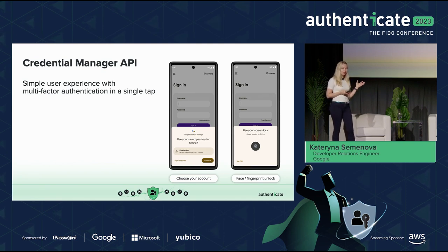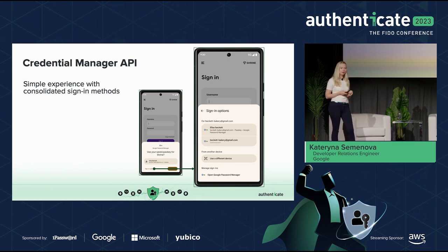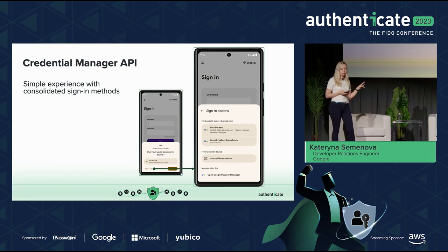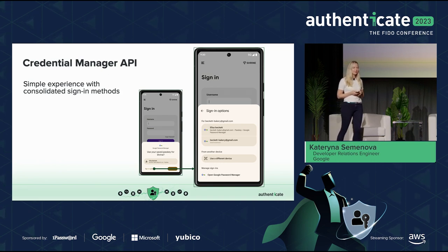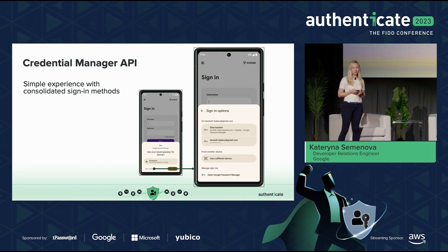Credential Manager consolidates different authentication methods. If a user has passwords, PassKeys, or any other methods, they can choose what way they want to sign in. But by default, we prefer PassKeys — if a user has enabled PassKeys, this is much more secure than passwords. Credential Manager API chooses the safest way of authentication by default. We're happy to share that Credential Manager is now available on beta, and in a couple of weeks we're releasing the final stable release.